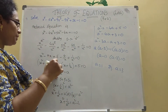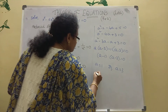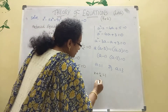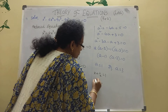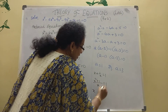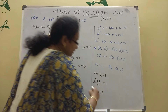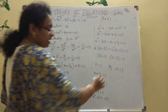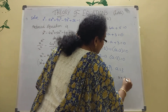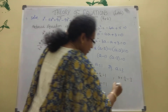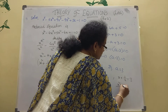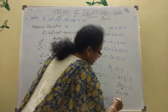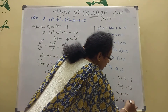If a = 1: x + 1/x = 1. Taking LCM: x^2 + 1 = x, so x^2 - x + 1 = 0. That is one equation. If a = 3: x + 1/x = 3. Taking LCM: x^2 + 1 = 3x, so x^2 - 3x + 1 = 0.